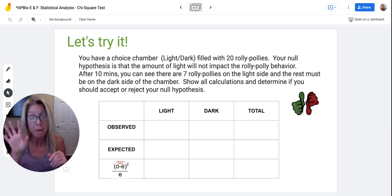Well, if you have 20 roly-polies, you'd expect half of them to be on the light and half of them to be on the dark. So you would expect 10 and 10.